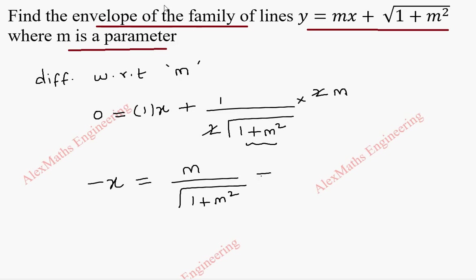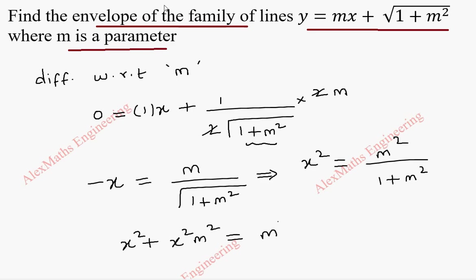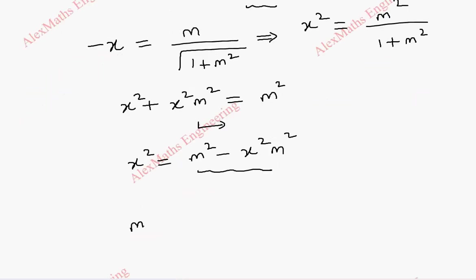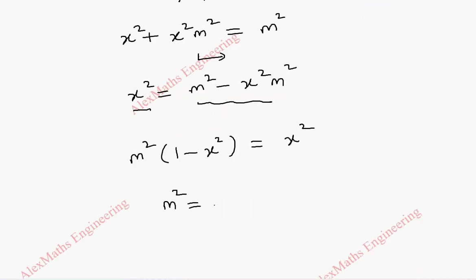Squaring on both sides, we get x² = m² / (1 + m²). By cross multiplication, we get x² + x²m² = m². Now we have to find m, so we take this term to the other side: x² = m² − x²m². Taking m² as common, we get x² = m²(1 − x²).